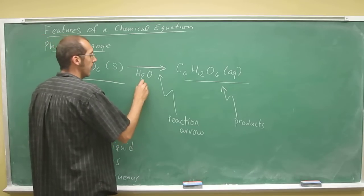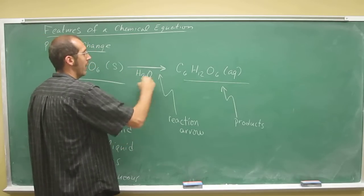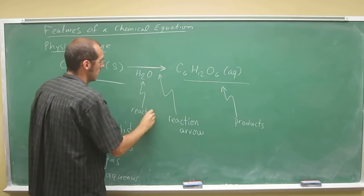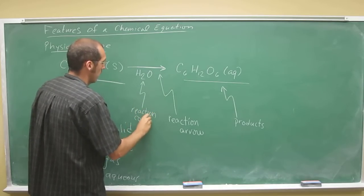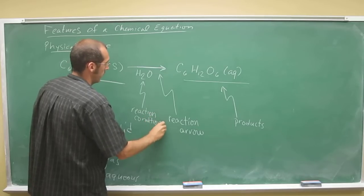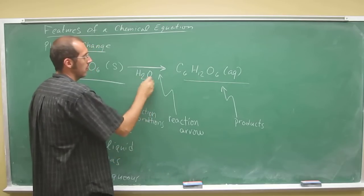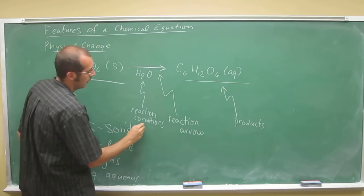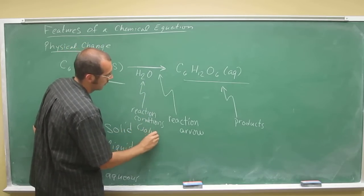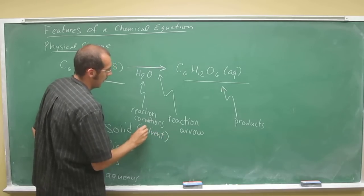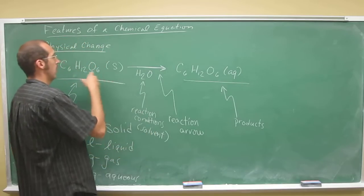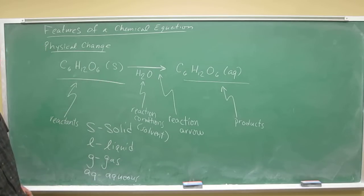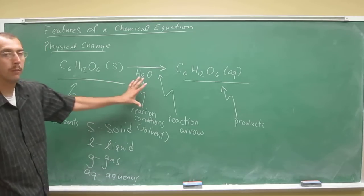Underneath the arrow, remember if it's around the arrow, we say they're the reaction conditions. Usually, if it's shown underneath the arrow, especially if it's water or some other common solvent, it is the solvent. And solvent just means what this reactant is dissolved into. So the major component of the mixture.